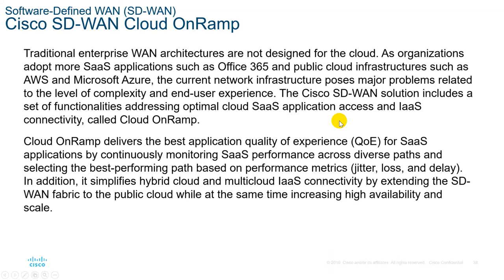Traditional enterprise WAN architectures are not designed for the cloud. As organizations adopt more SaaS applications such as Office 365 and public cloud infrastructure such as AWS and Microsoft Azure, the current network infrastructure poses major problems related to complexity and end-user experience. The Cisco SD-WAN solution includes a set of functionalities called Cloud onRamp, addressing optimal cloud SaaS application access and IaaS connectivity. Cloud onRamp delivers the best application quality of experience or QoE for SaaS applications by continuously monitoring SaaS performance across diverse paths and selecting the best-performing path based on performance metrics including jitter, loss, and delay.